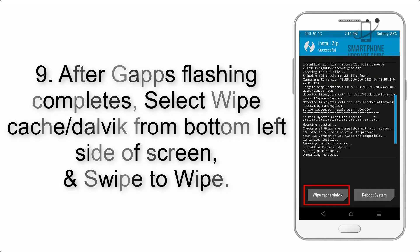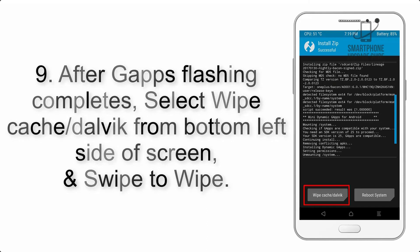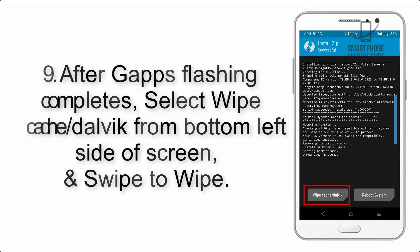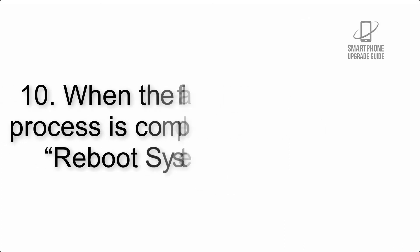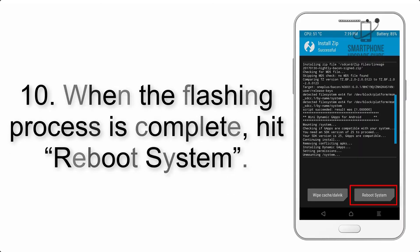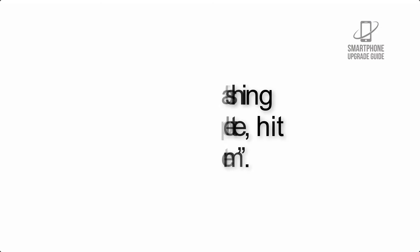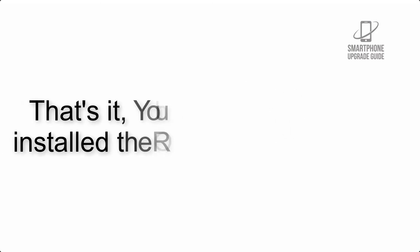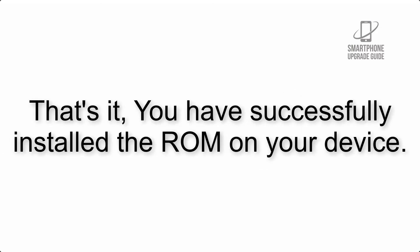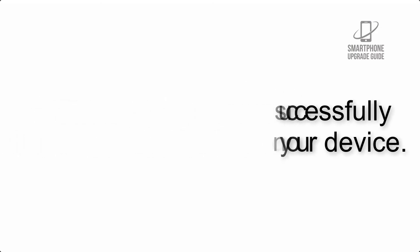Step 9: After GApps flashing completes, select Wipe Cache and Dalvik from the bottom left side of the screen and swipe to wipe. Step 10: When the flashing process is complete, hit Reboot System. That's it — you have successfully installed the ROM on your device.